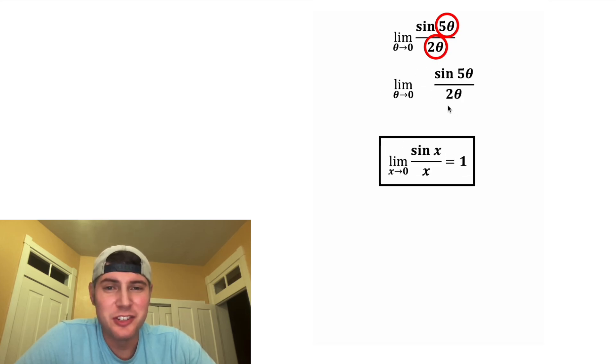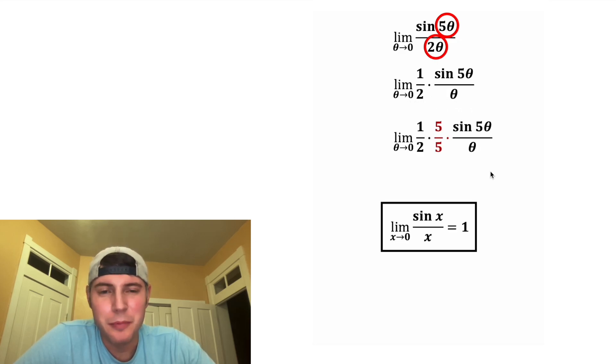Step 1, let's get rid of this 2. We're going to pull it out, so we have 1 half times all of this. And then for the next step, let's multiply top and bottom by 5.